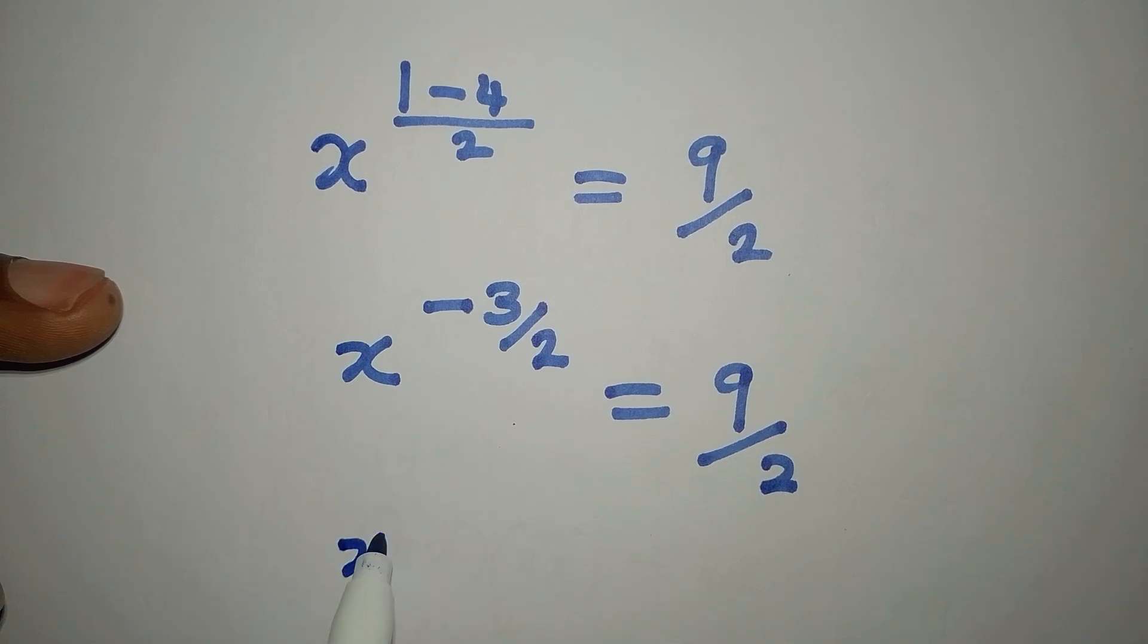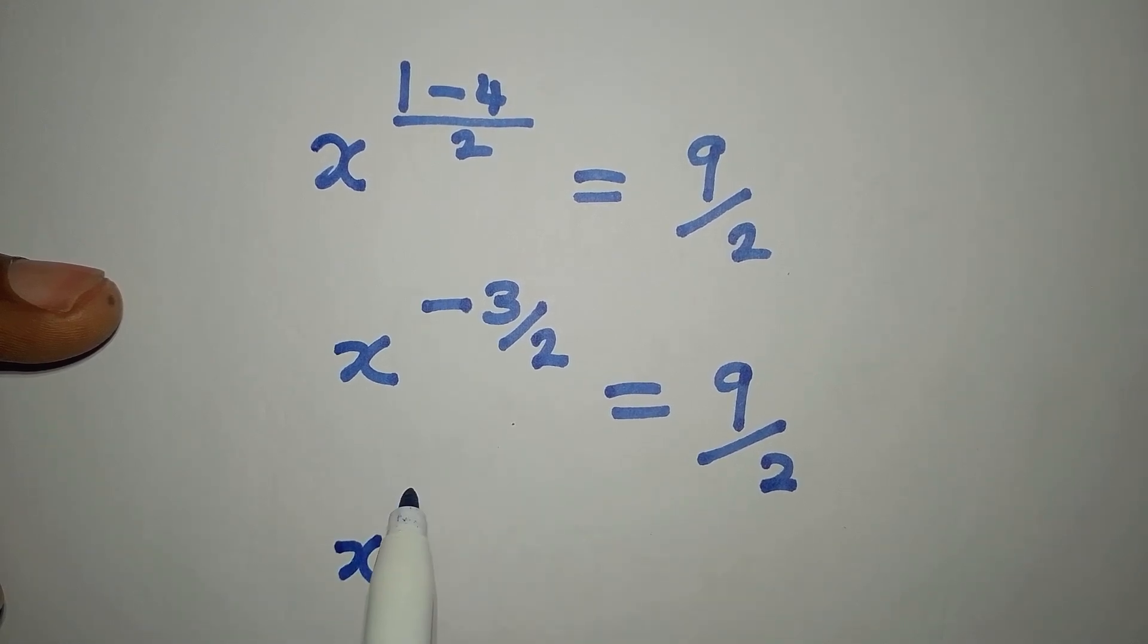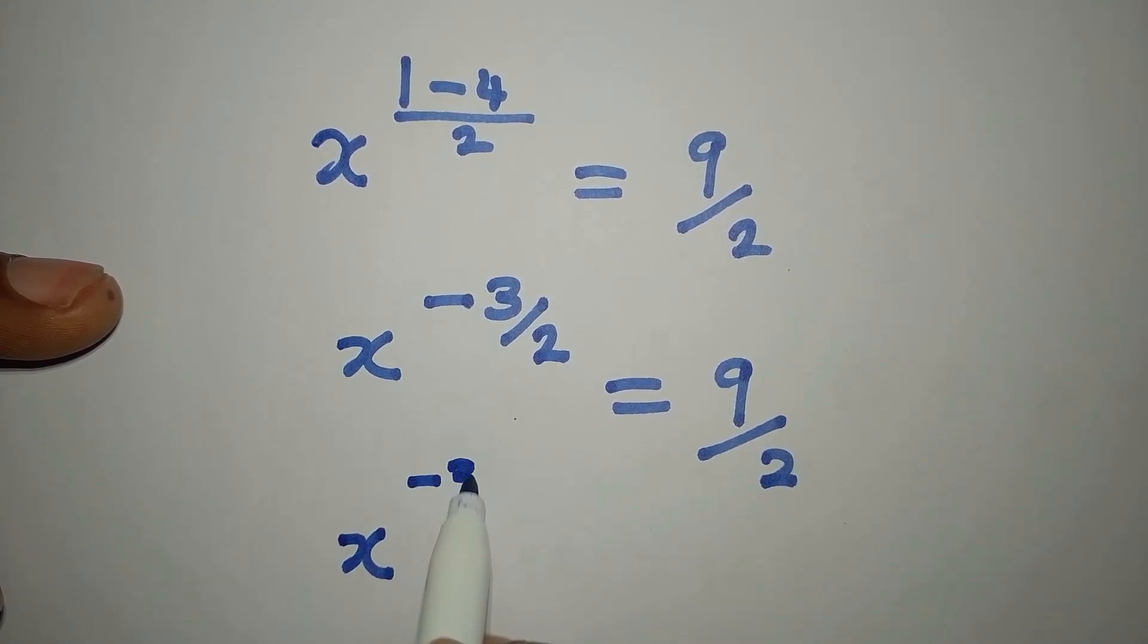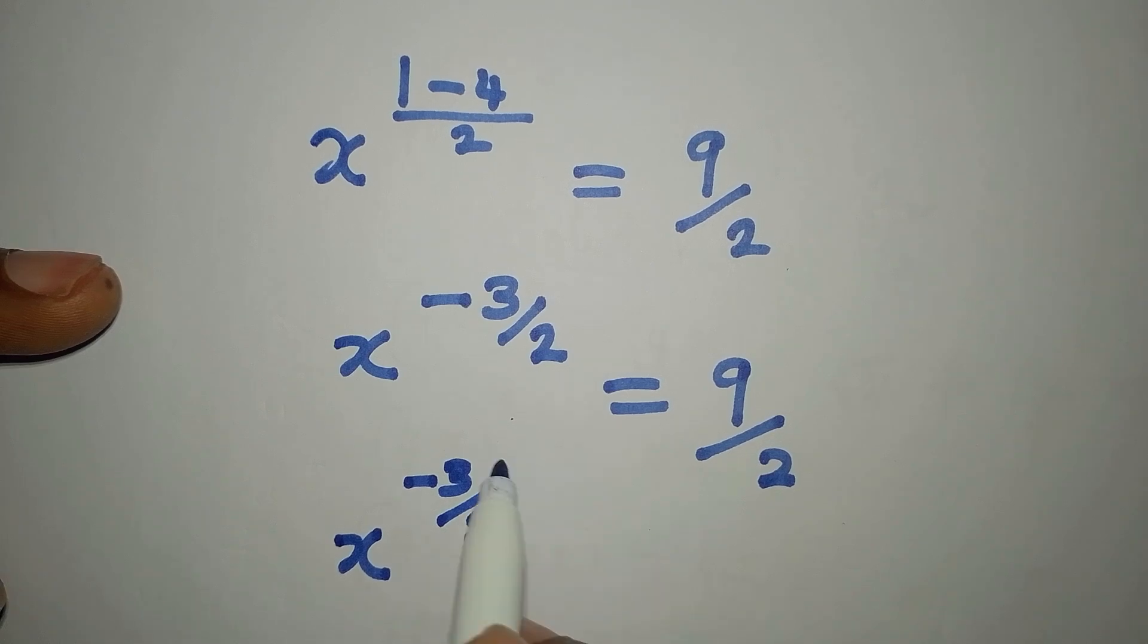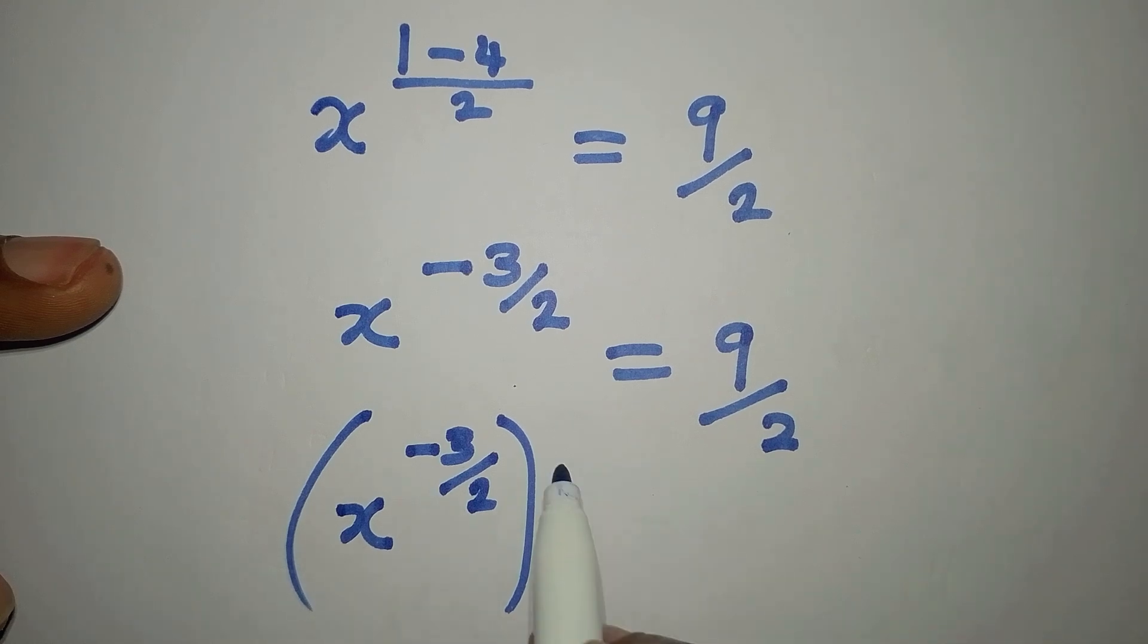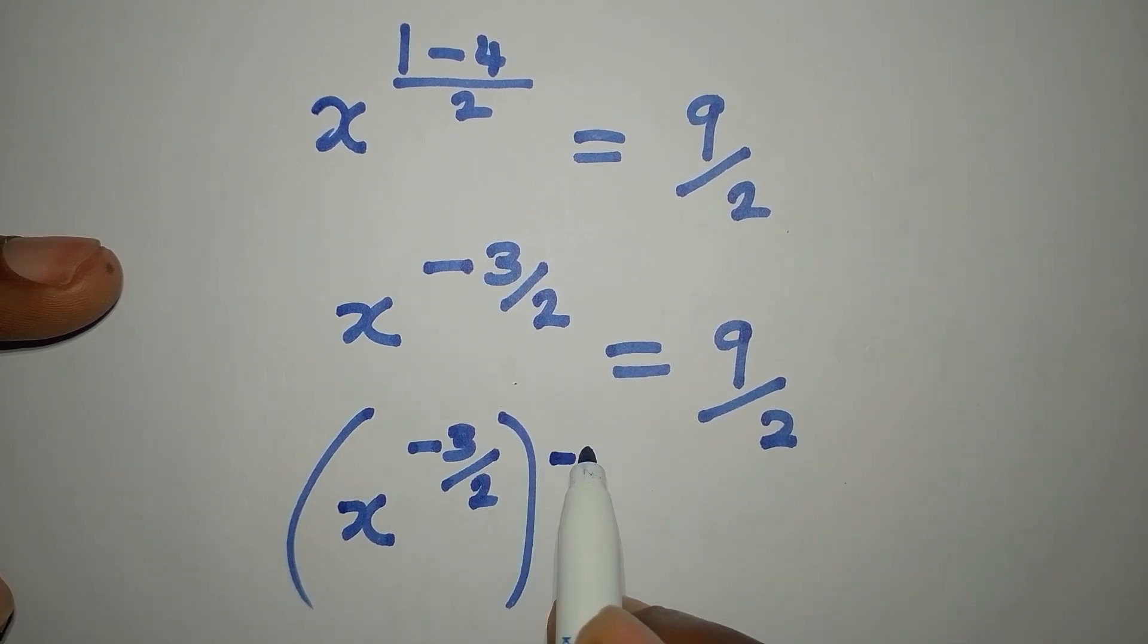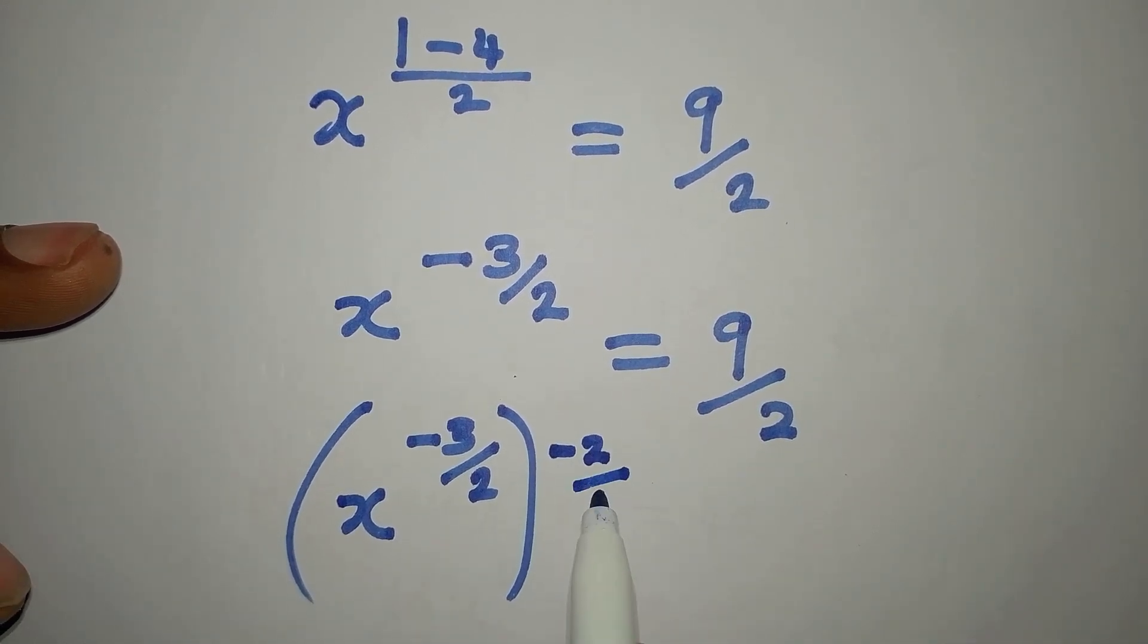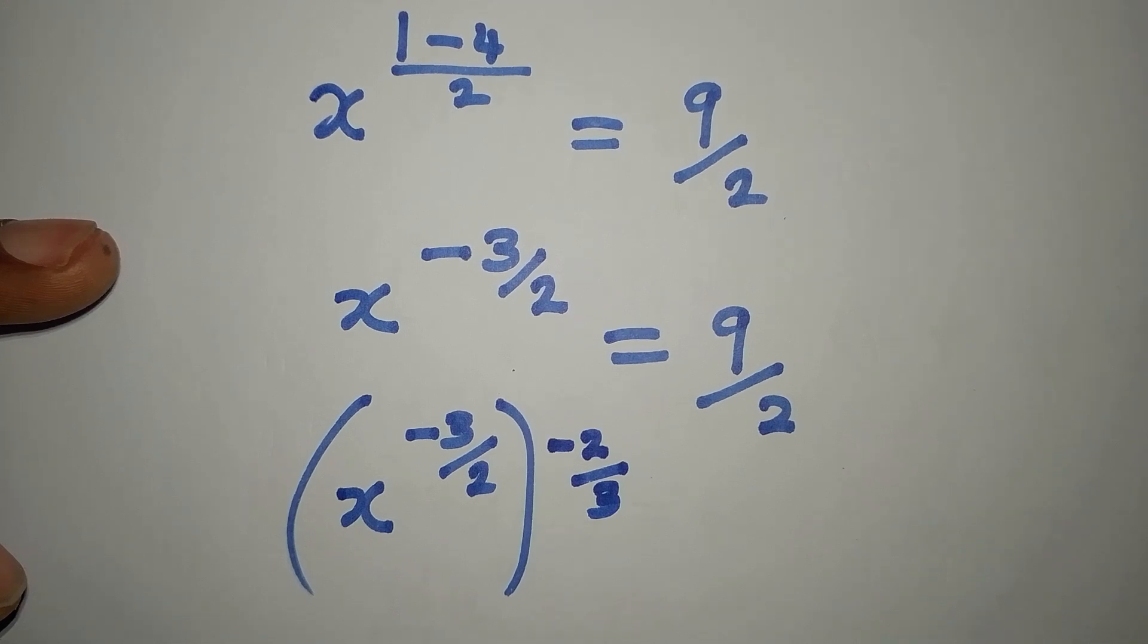We are interested in removing the power, so we are going to have x^(-3/2). Now let's get this power here. The reciprocal of the power is -2/3.